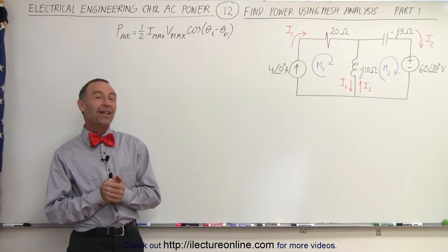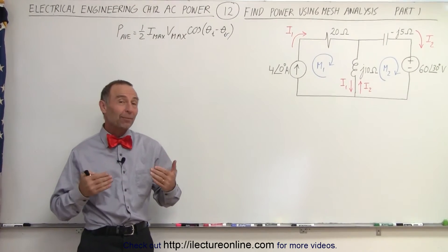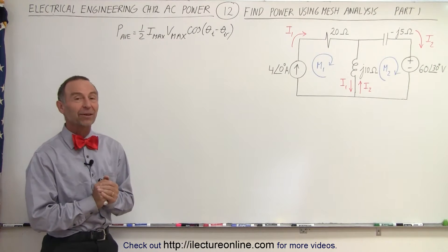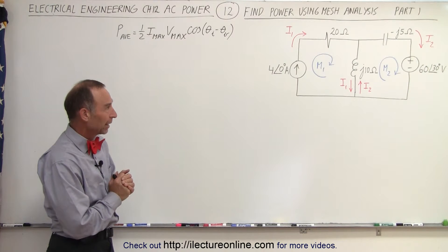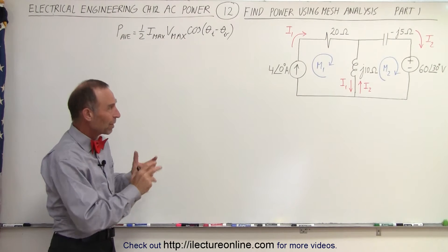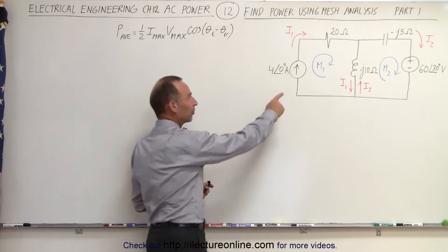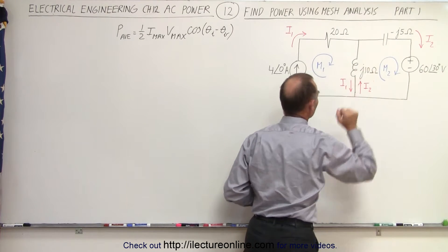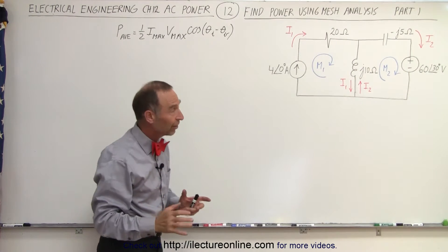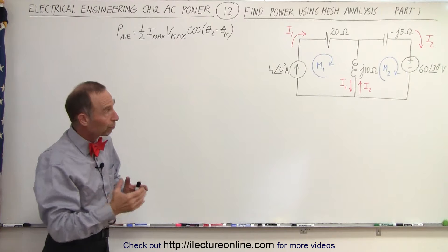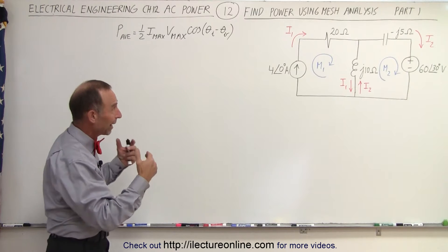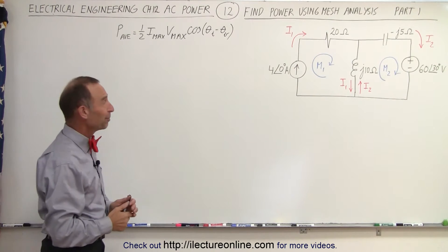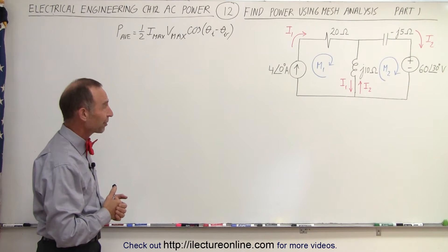Welcome to my lecture online. Now let's apply what we've learned so far on a circuit that is slightly more complex than what we've seen so far. Here we have a circuit with two meshes. We have a current supply, a voltage supply, a resistor, a capacitor, and an inductor. We're trying to find the power supplied or absorbed by all five of these components.